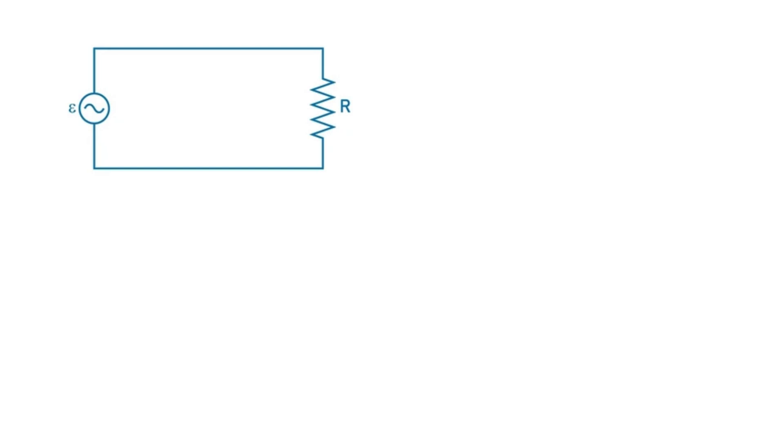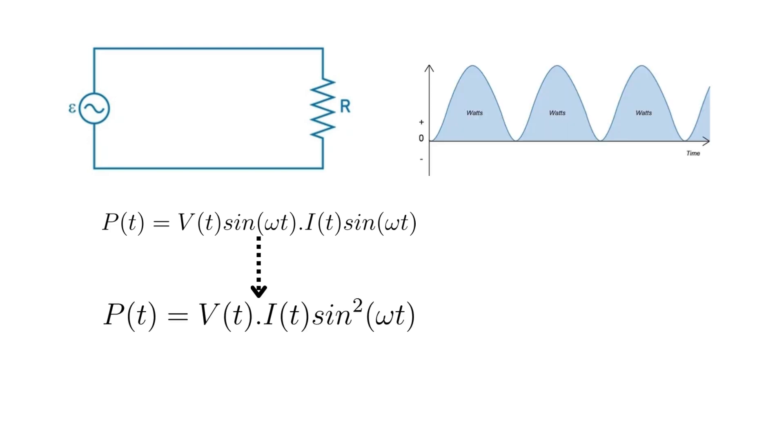When a resistor is connected to an AC supply, then power dissipated by the resistor is given by this equation. This tells us that the power also varies with time, but is always positive due to this squaring factor. There are points when the power dissipated is zero, corresponding to points in time when current and voltage values are zeros.